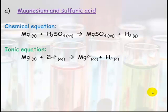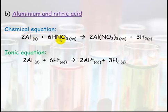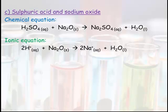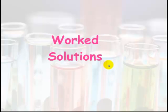Here are the answers. Check them carefully — you might want to pause on each of these pages. The chemical equation for magnesium plus sulfuric acid: it will make magnesium sulfate, the salt, plus hydrogen gas. Here's your ionic equation — make sure you've carefully put in your states and checked your charges. Aluminium plus nitric acid will make aluminium nitrate, the salt, plus hydrogen gas. And sulfuric acid and sodium oxide will make sodium sulfate plus water. Double check these carefully. If you've gotten those right, you can move on with chapter 13 questions, but if you're still confused, have a look at the worked solutions which follow.